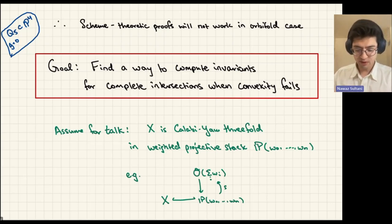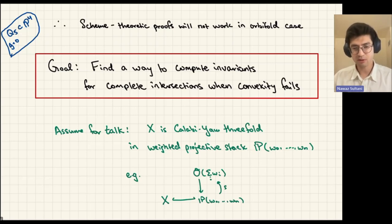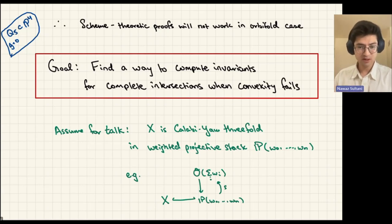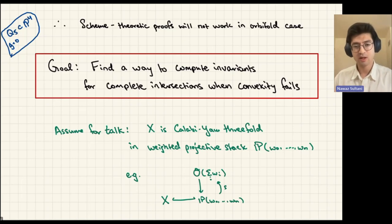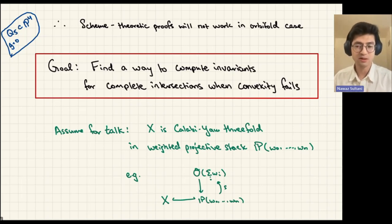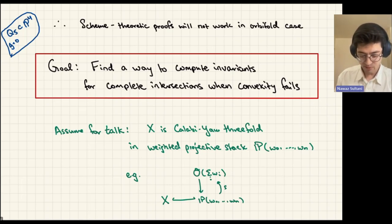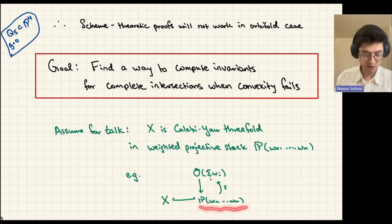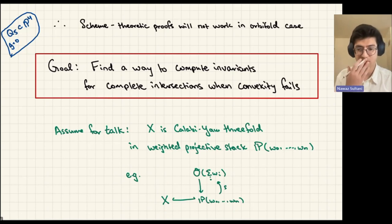The main goal of the research presented here is to find a way to compute invariants for complete intersections when convexity fails. The assumption for this talk is that we'll look at Calabi-Yau threefolds inside weighted projective stacks. The results work more generally for toric stacks and any complete intersection in toric stacks, but Calabi-Yau threefolds are what most people care about numerically, and weighted projective stacks are easy enough to understand even if you're not familiar with Deligne-Mumford stacks.